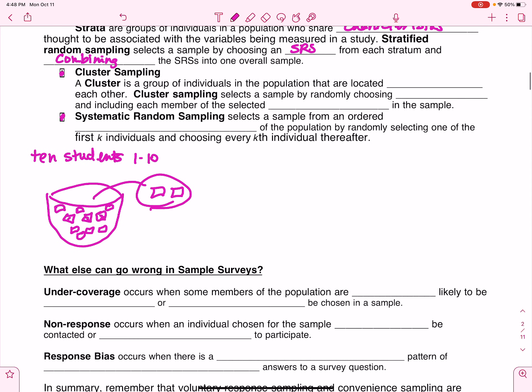Okay, so cluster sampling. This is another type of random sampling. The thing that's confusing about clusters is that clusters are groups of the population that are located in general near each other. So this is about location.